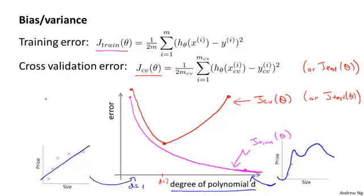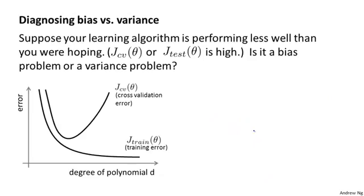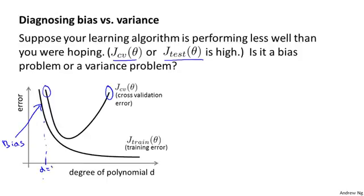This plot helps us better understand bias and variance. Suppose your cross-validation error or test set error is high — how do we figure out whether the algorithm is suffering from high bias or high variance? A high cross-validation error corresponds to either the left regime or the right regime of this curve. The left regime corresponds to a high bias problem — fitting an overly low-order polynomial when a higher order was needed. The right regime corresponds to a high variance problem, where d was too large for the dataset we have.